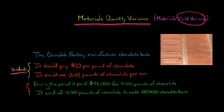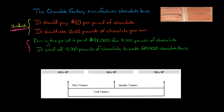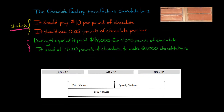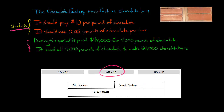How do we go about calculating the materials quantity variance? I like to set it up with three columns: actual quantity times actual price, actual quantity times standard price, and standard quantity times standard price. You only need the two on the right to calculate the quantity variance — it's the difference between actual quantity times standard price and standard quantity times standard price.